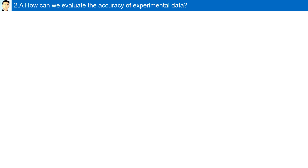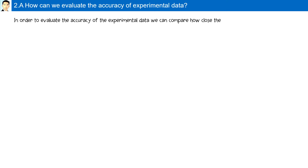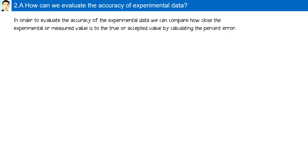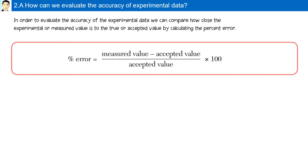How can we evaluate the accuracy of experimental data? In order to evaluate accuracy, we can compare how close the experimental or measured value is to the true or accepted value by calculating the percent error. The formula is: measured value minus accepted value, divided by the accepted value, multiplied by 100.